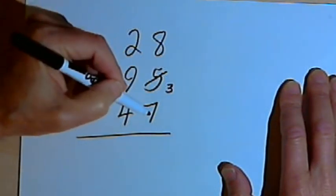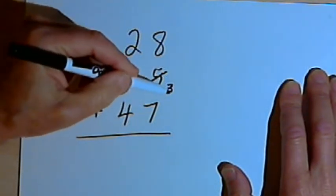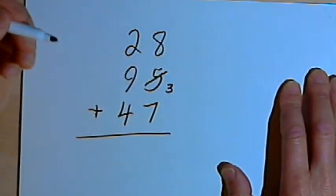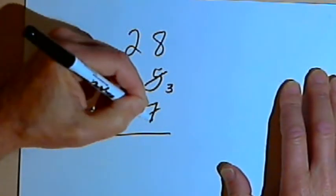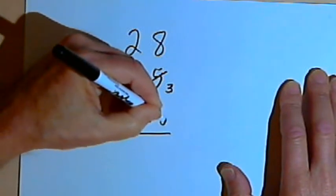Then I'm going to take the 3 and add it to 7. 3 plus 7 is 10, a two-digit number. I'll cross out the 7 and write the units part, which is just 0.